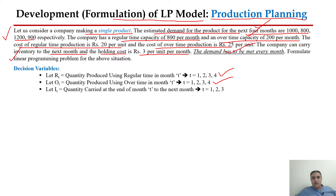Similarly, we have the inventory carrying quantity — how much quantity we can carry to the next month. Here I am mentioning three inventory decision variables: i1, i2, up to i3. That means at the end of the four months there should be no inventory. However, we could also write i4 if we want some ending inventory. When solving in Excel Solver, I will consider this variable, but in formulating, I am not writing i4 because I want no inventory at the end of month four.